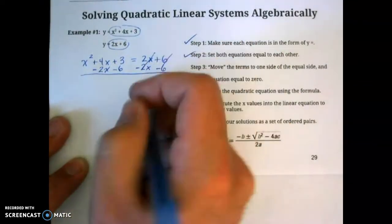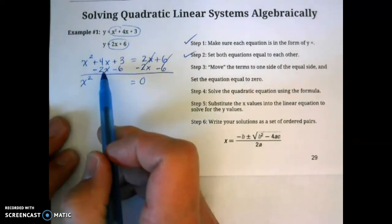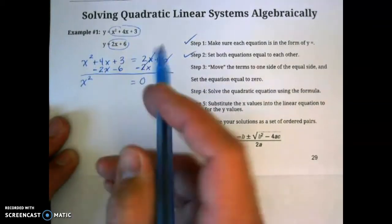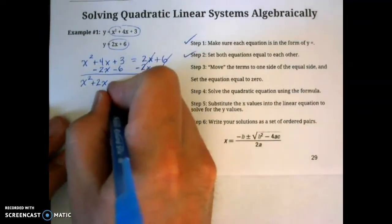You can do this in two different steps, or you can do it all at once. These will cancel. You'll be left with 0. And then on the left side, we have nothing to combine with the x squared. We bring it down. A negative 4x and a positive 4x and a negative 2x would give you a positive 2x. And a positive 3 subtract 6 would be minus 3.